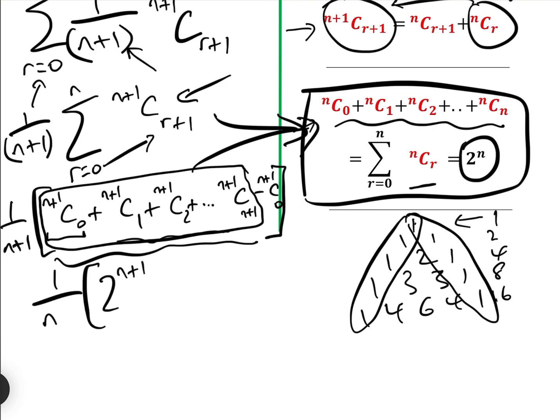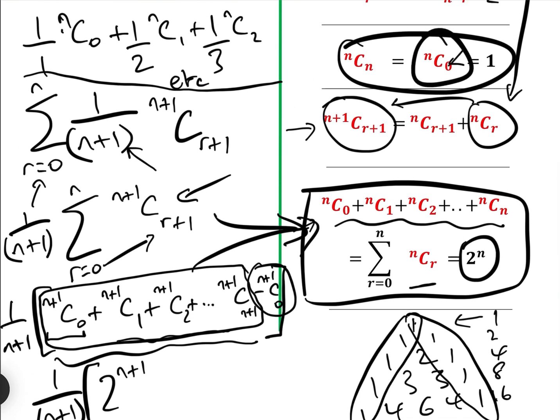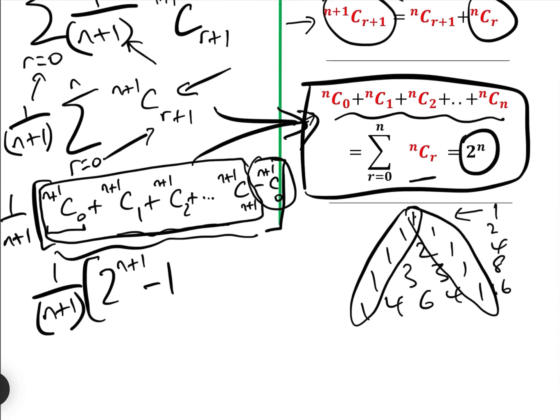And therefore, we have our answer, which is 1 over n plus 1, 2 to the n plus 1. We've just got to deal with this n plus 1 choose 0. Well, we know that from here, anything where this subscript here is 0 is 1. So equals 1.